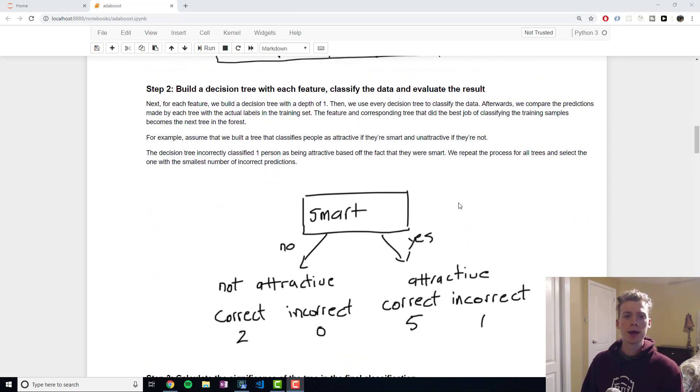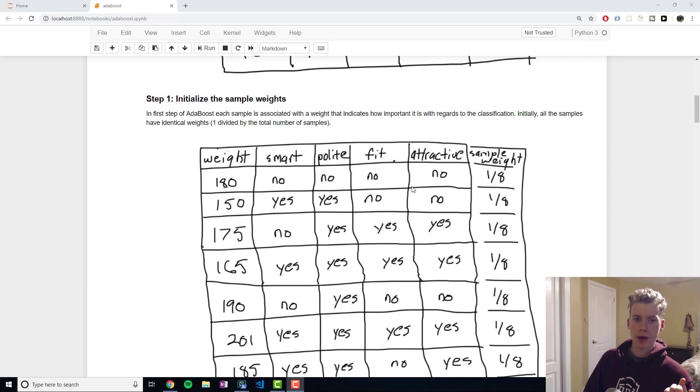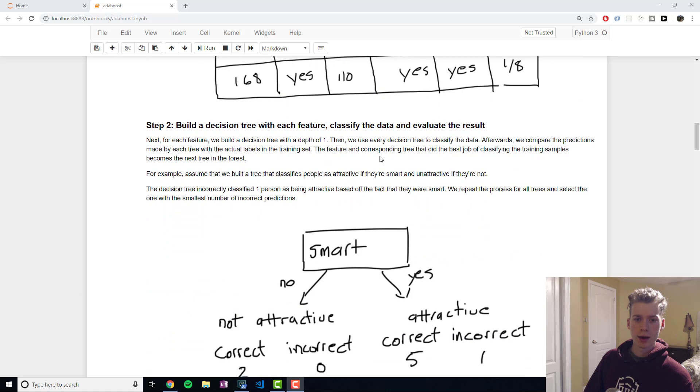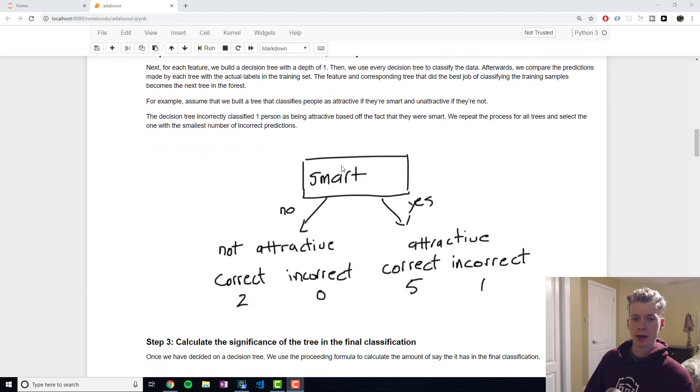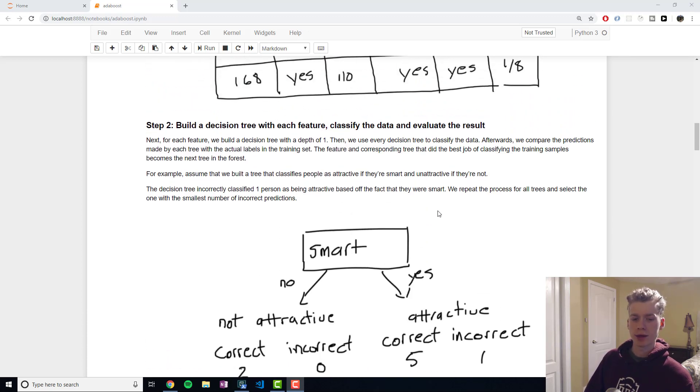The second step is to build a decision tree with each feature and use that to classify the data. We would build a decision tree out of our smart feature, with a certain threshold weight for whether they were polite or not and whether they were fit or not. This is our single node decision tree, and we are going to attempt to classify people as being attractive or not. The assumption we're making is that if they're smart then they're attractive, and if they're not then they're not attractive.